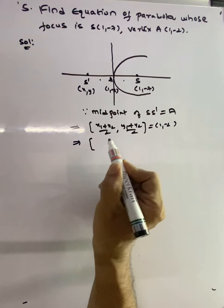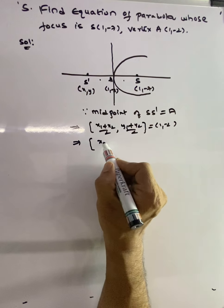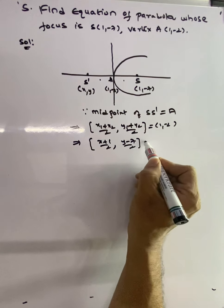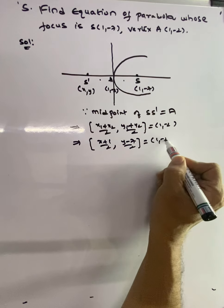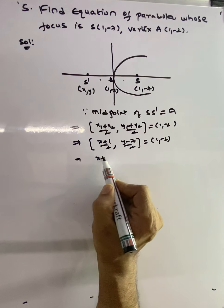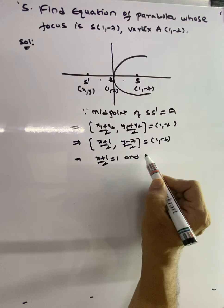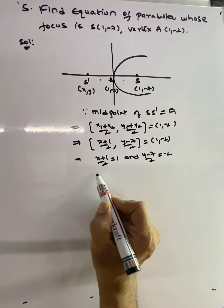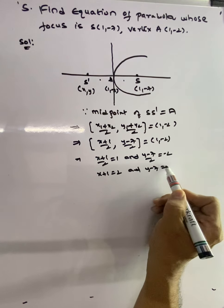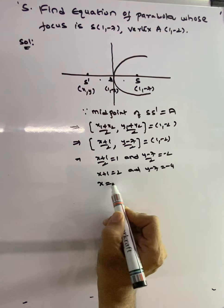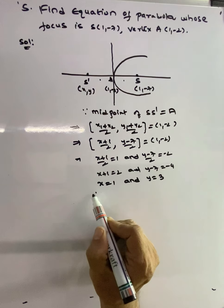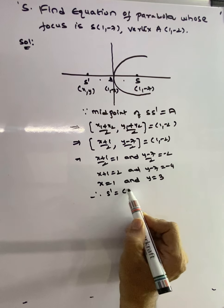From S = (1, -7) and S' = (X, Y): (X + 1)/2 = 1 gives X + 1 = 2, so X = 1. And (Y - 7)/2 = -2 gives Y - 7 = -4, so Y = 3. Therefore S' = (1, 3).